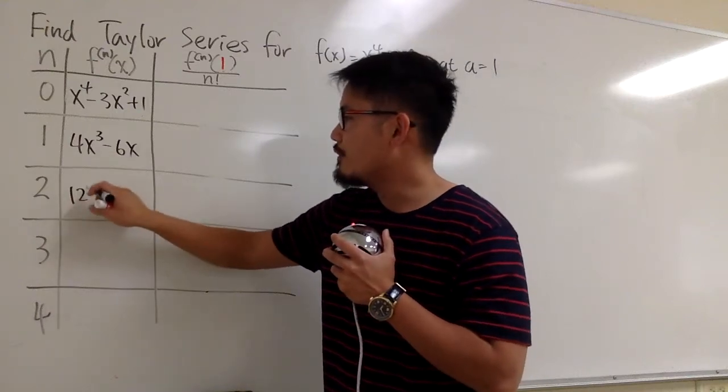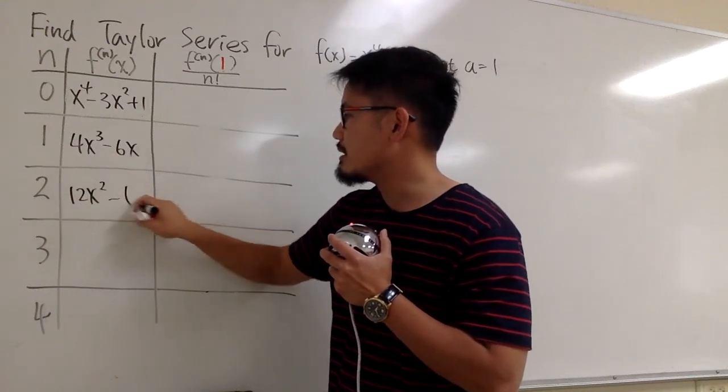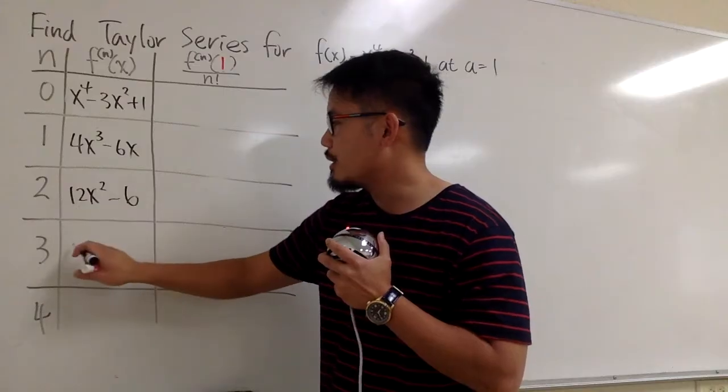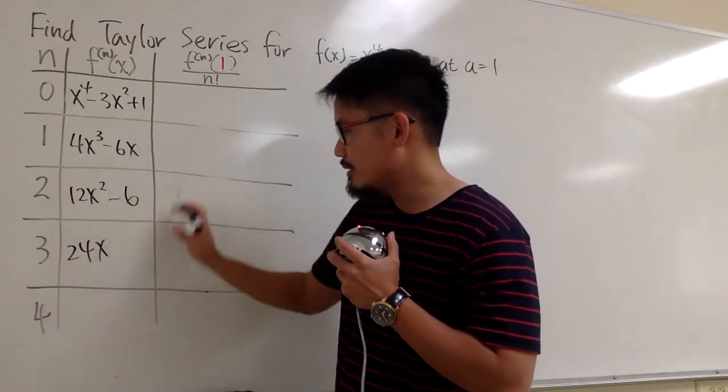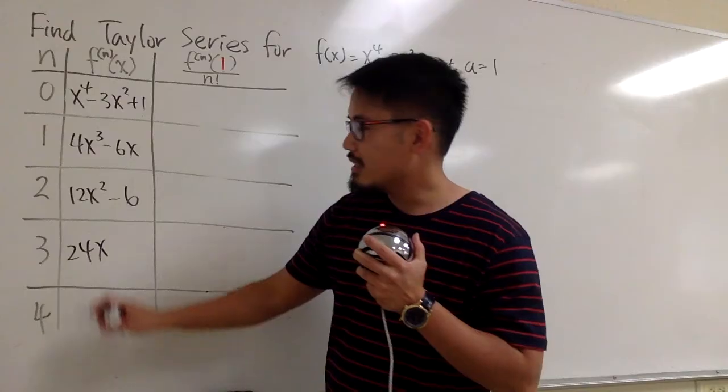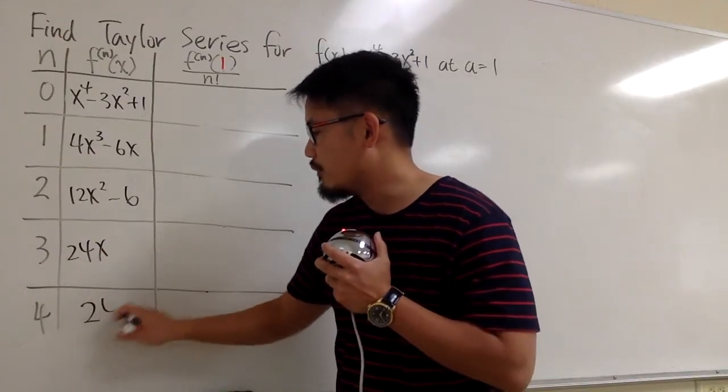We will have 12x to the second power minus 6. And then that will be 24x. After that, at the end, the derivative of 24x is just 24.